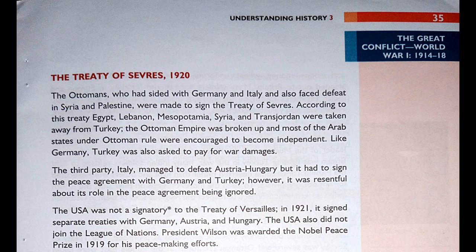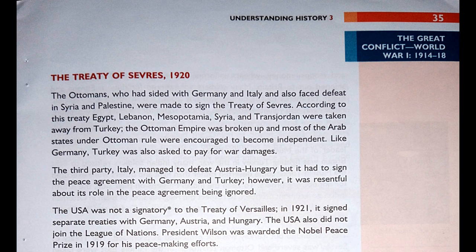Italy managed to defeat Austria-Hungary but had to sign peace agreements with Germany and Turkey. However, Italy was resentful — resentful meaning feeling or expressing bitterness — about its role in the peace agreement being ignored. The USA was not a signatory to the Treaty of Versailles; in 1921 it signed separate treaties with Germany, Austria and Hungary. The USA also did not join the League of Nations. President Wilson was awarded the Nobel Peace Prize in 1919 for his peacemaking efforts.